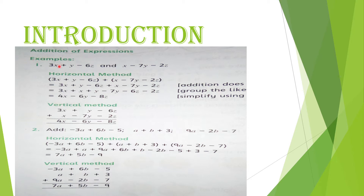Pehli example dekhen. Pehli expression hai 3x plus y minus 6z, aur doosri expression hai x minus 7y minus 2z. Is ke do method hain — ek horizontal method hai, ek vertical method hai.